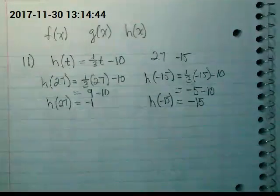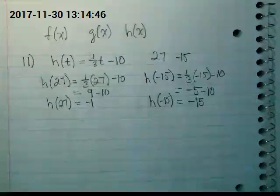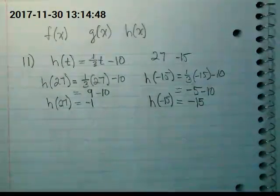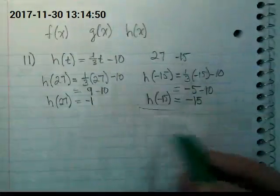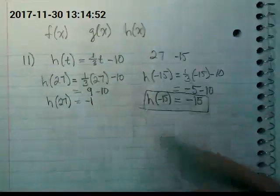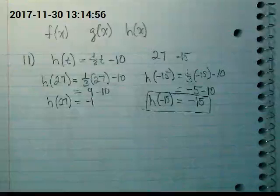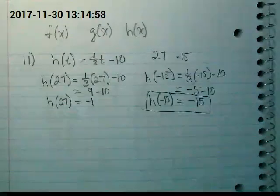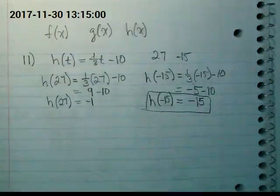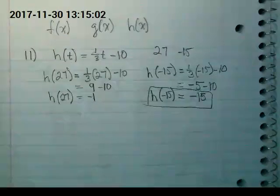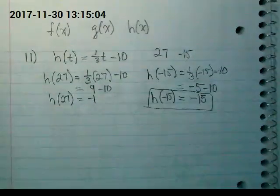Over here, 1/3 of negative 15 is going to be negative 5 minus 10 equals negative 15. So when my input was negative 15, my output was also negative 15. You don't need to keep rewriting h when you're solving, but it is part of your answer. So you should make sure you bring that down at the very end.